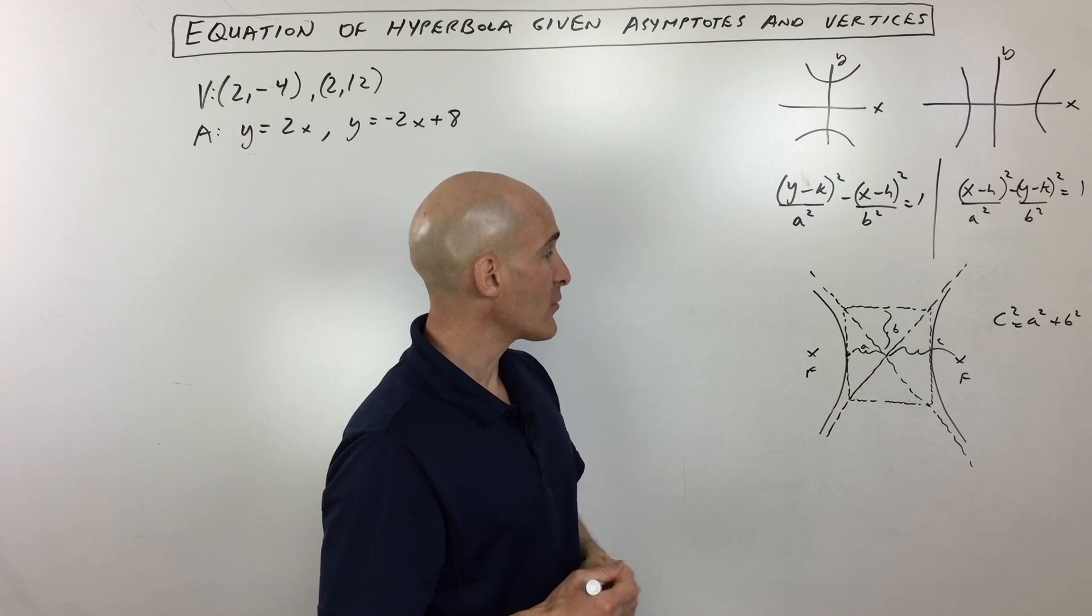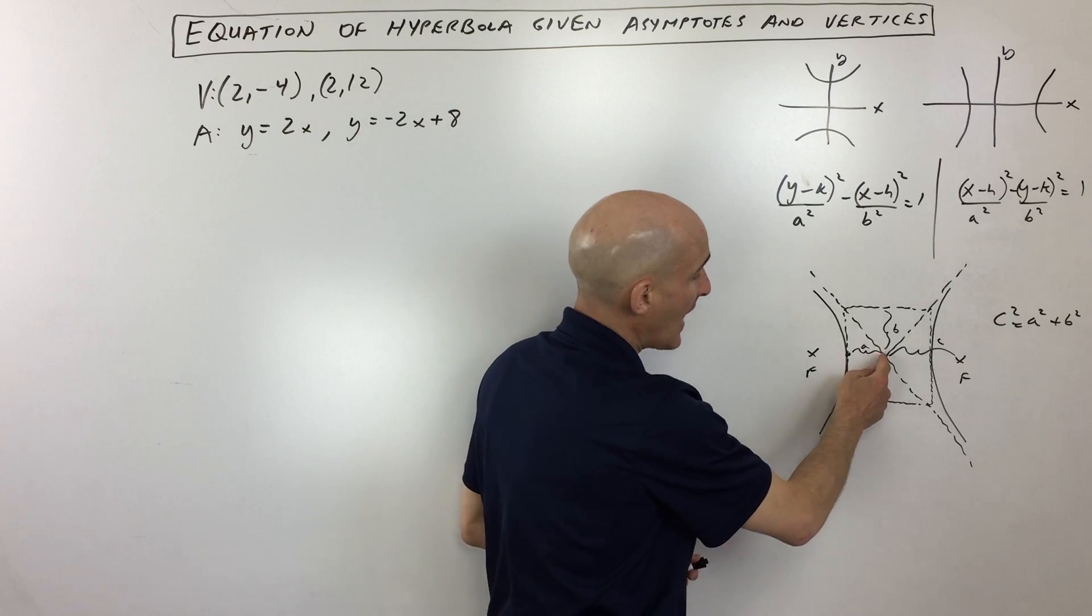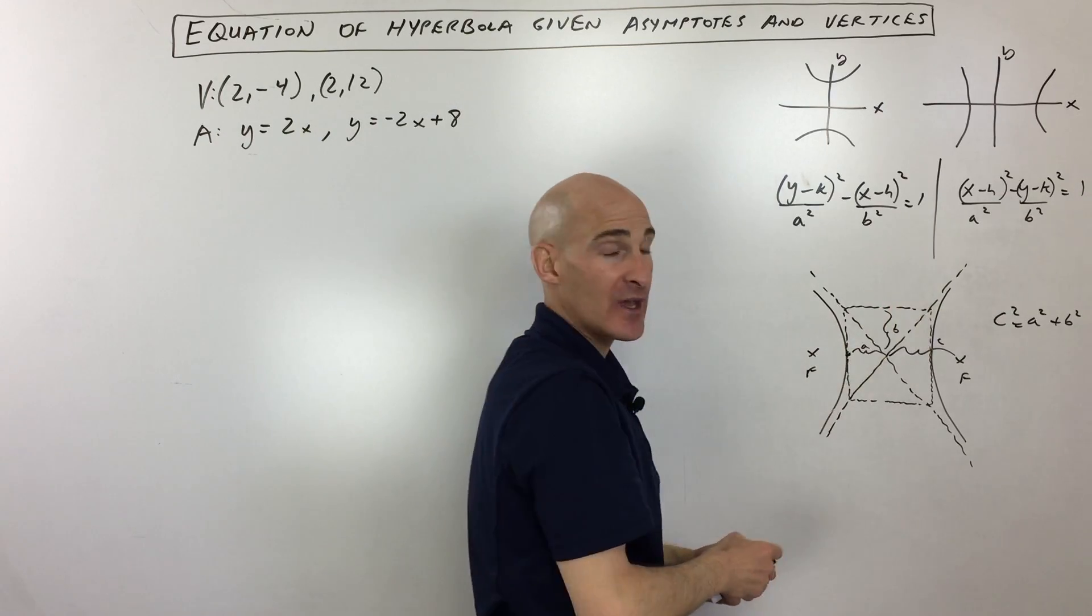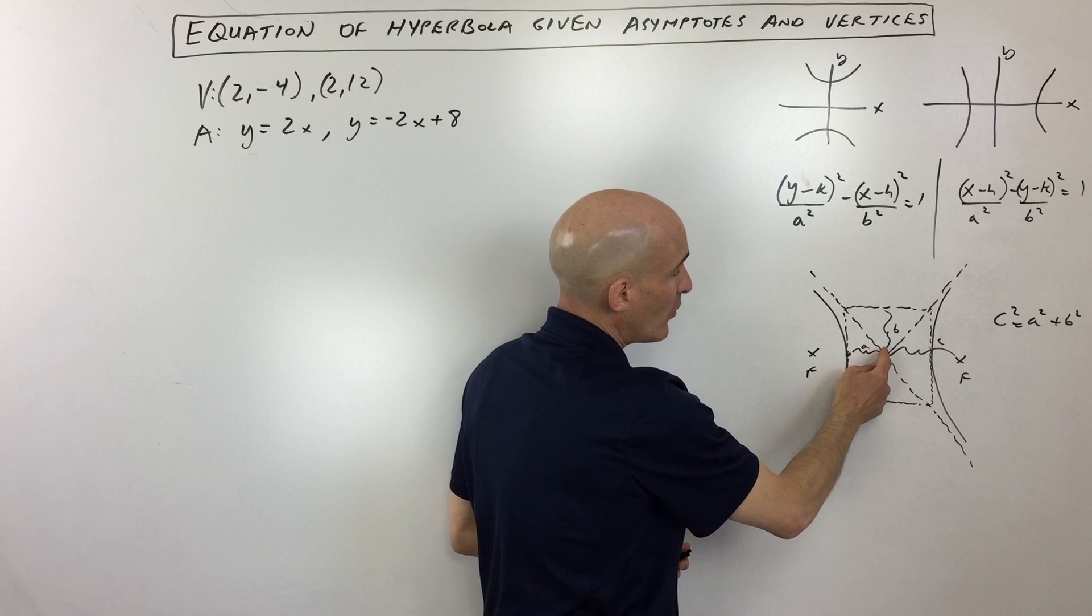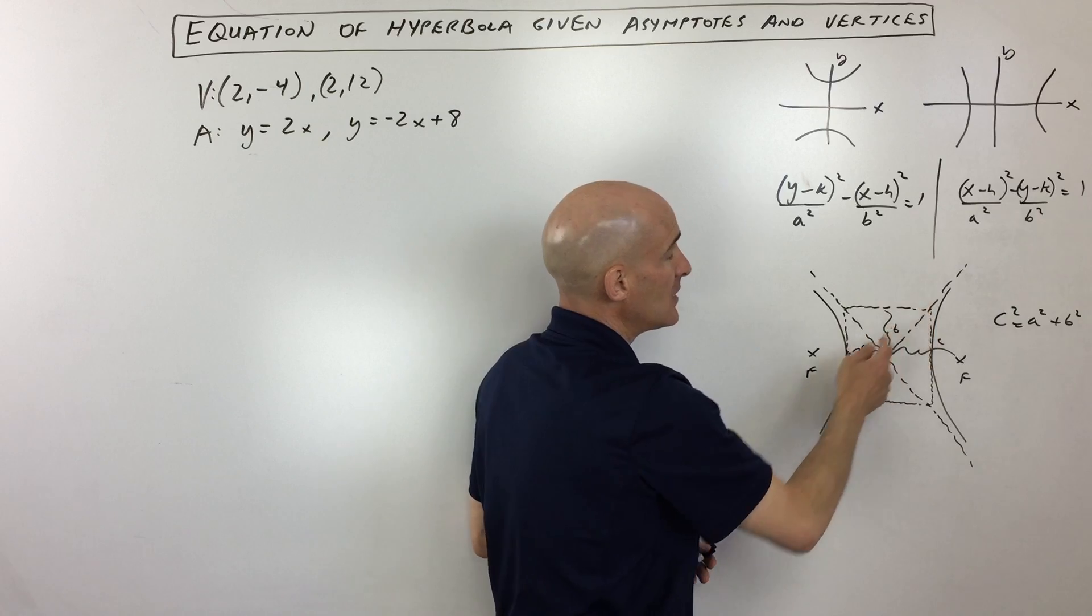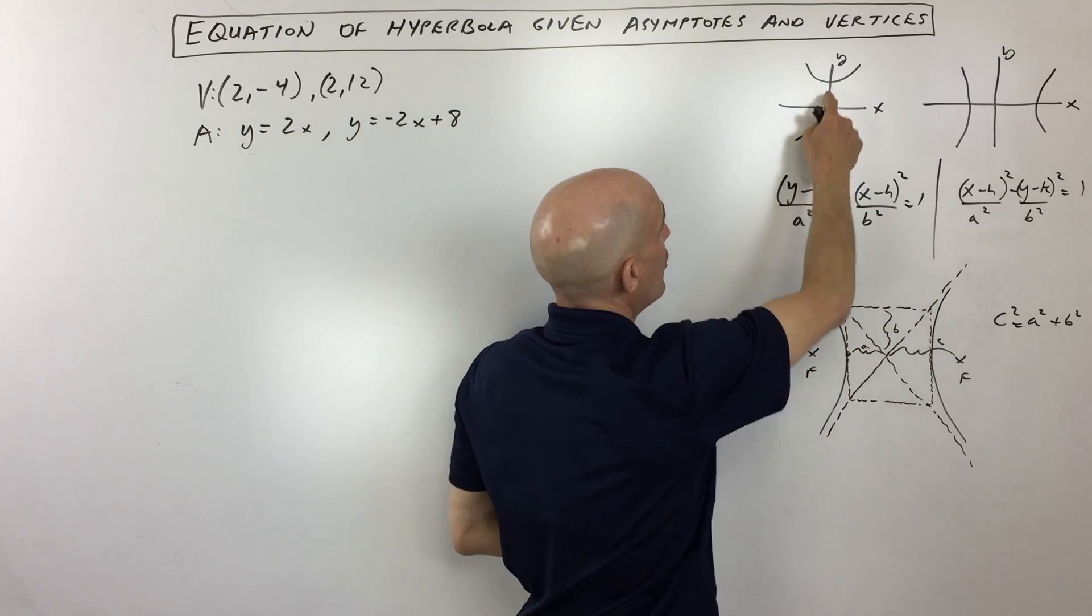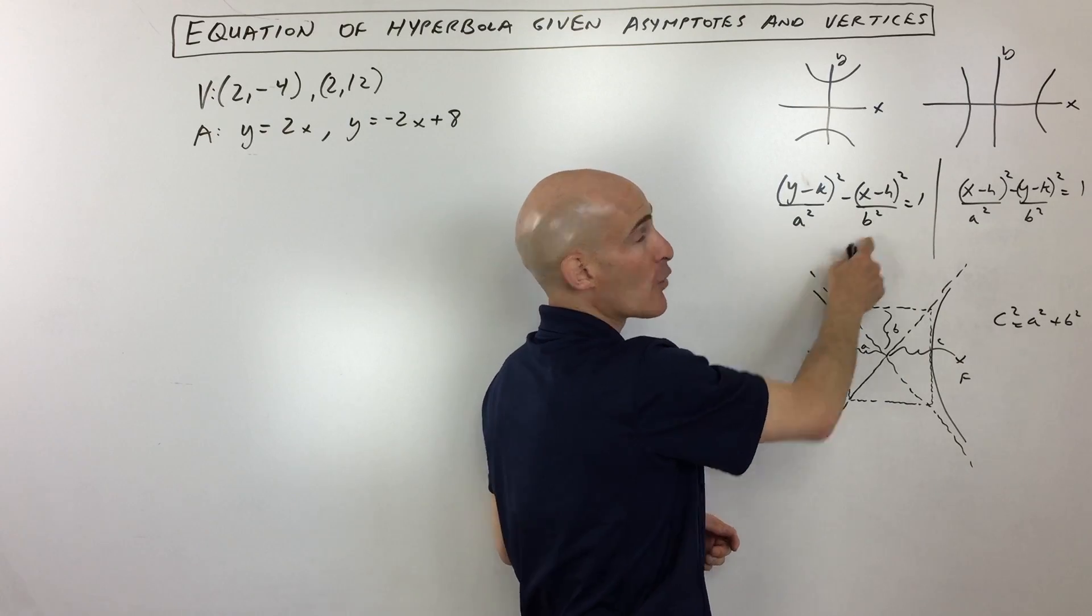The other thing to recognize is that when you have these asymptotes, the slope of a line is the rise over the run. So you can figure out, well if I go this much for the rise, this much for the run, in this case it's going to be b over a. But if it was open the other direction like so, you would actually be doing a over b.